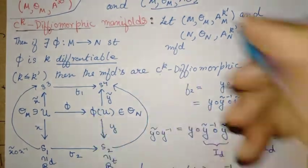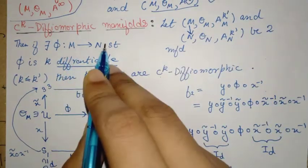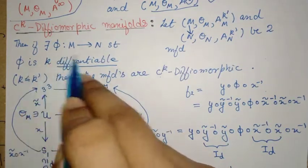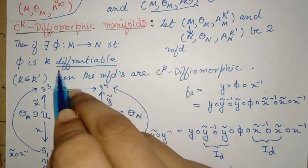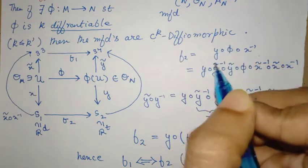I can talk about making a map from M to N. If there exists a map from M to N that is also k times differentiable, then the manifolds are said to be C^k diffeomorphic.